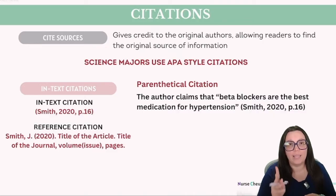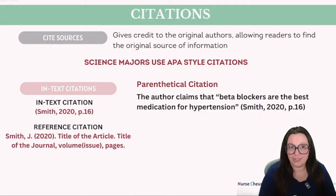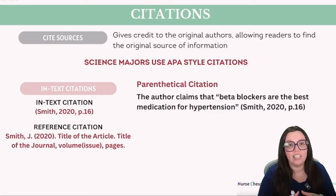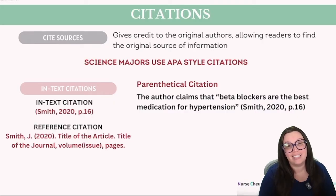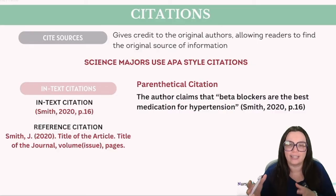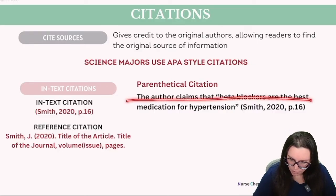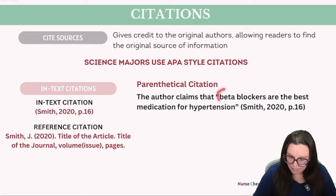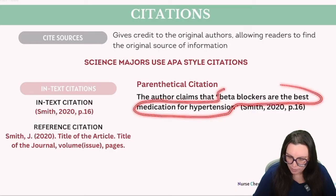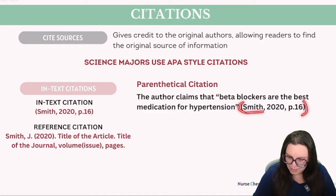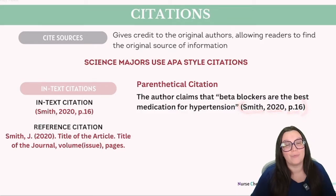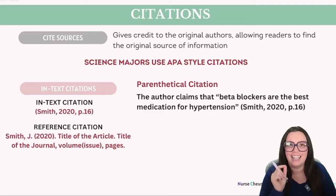There are two methods for embedding in-text citations: parenthetical and narrative, also known as paraphrasing. In parenthetical citations, we enclose the author's name and the year of publication within parentheses, positioned at the sentence's end immediately preceding the period. For example: 'The author claims that beta blockers are the best medications for hypertension.' We put quotation marks around the actual phrase that came directly from the author, then in parentheses we put Smith, the year of publication, and the page number if we're citing something specific.